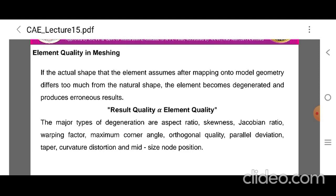If the actual shape that the element assumes after mapping onto model geometry differs too much from the natural shape, the element becomes degenerated and produces erroneous results. Result quality is proportional to element quality.